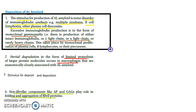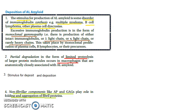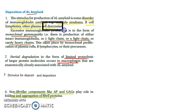First of all, you need a stimulus for AL. The stimulus here will be some disorder of immunoglobulin synthesis — for example, multiple myeloma, B-cell lymphoma, or other plasma cell dyscrasias.